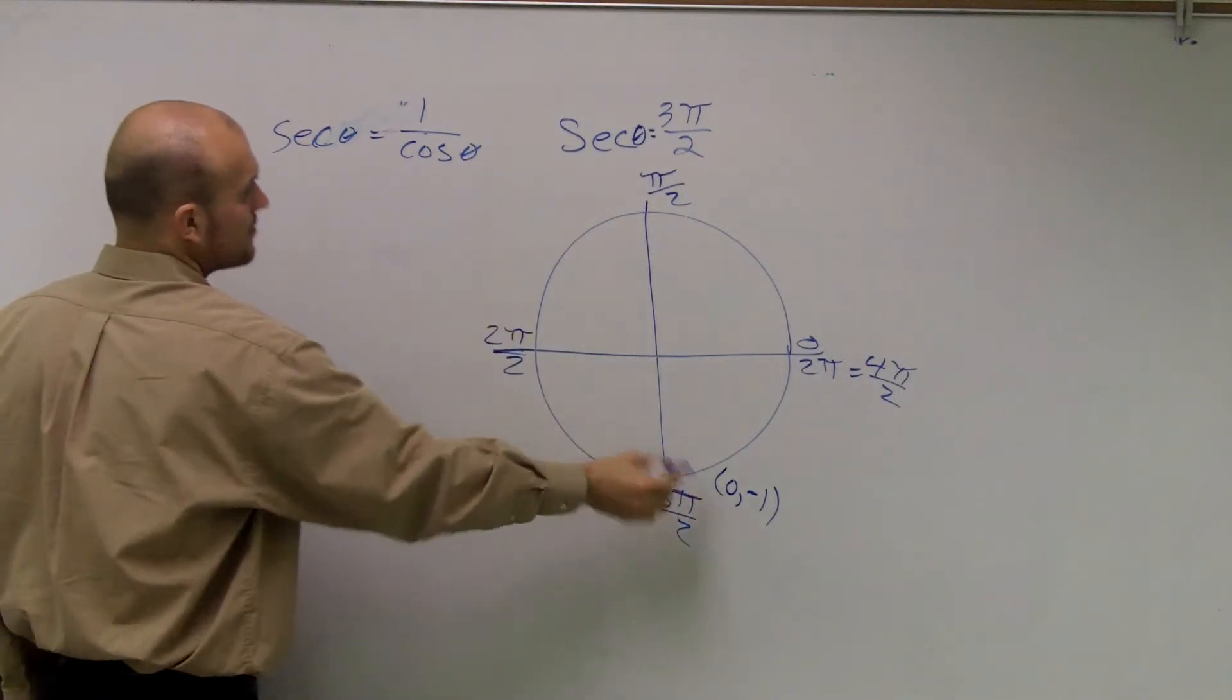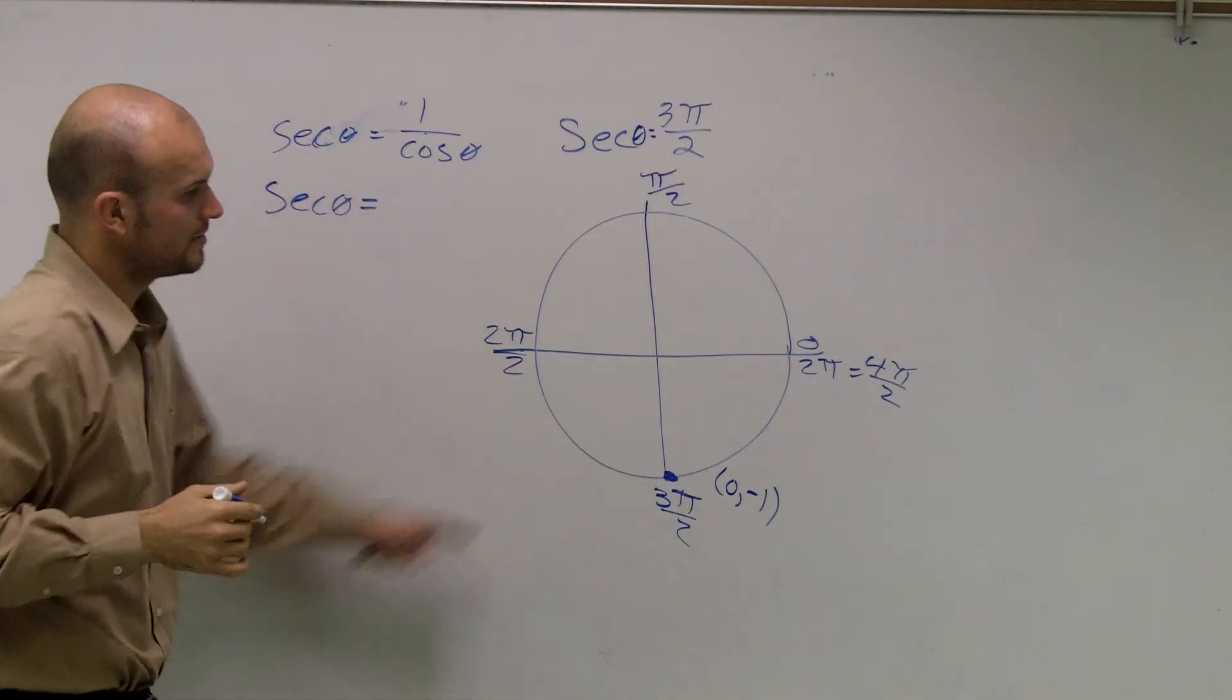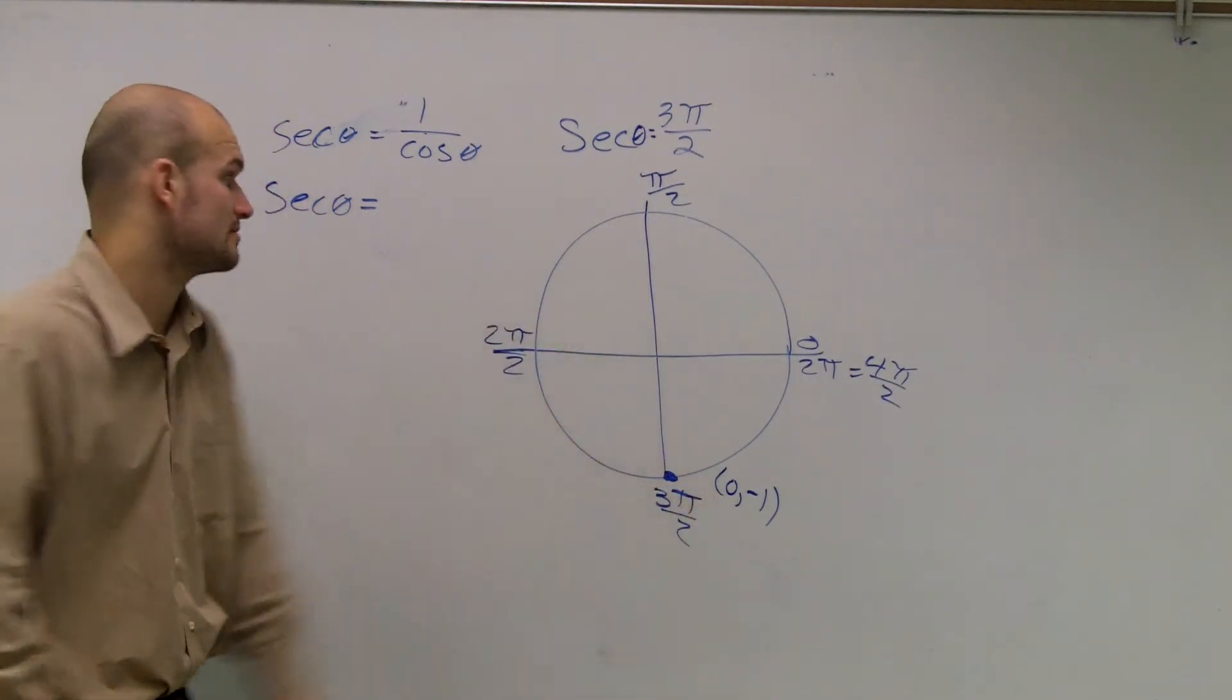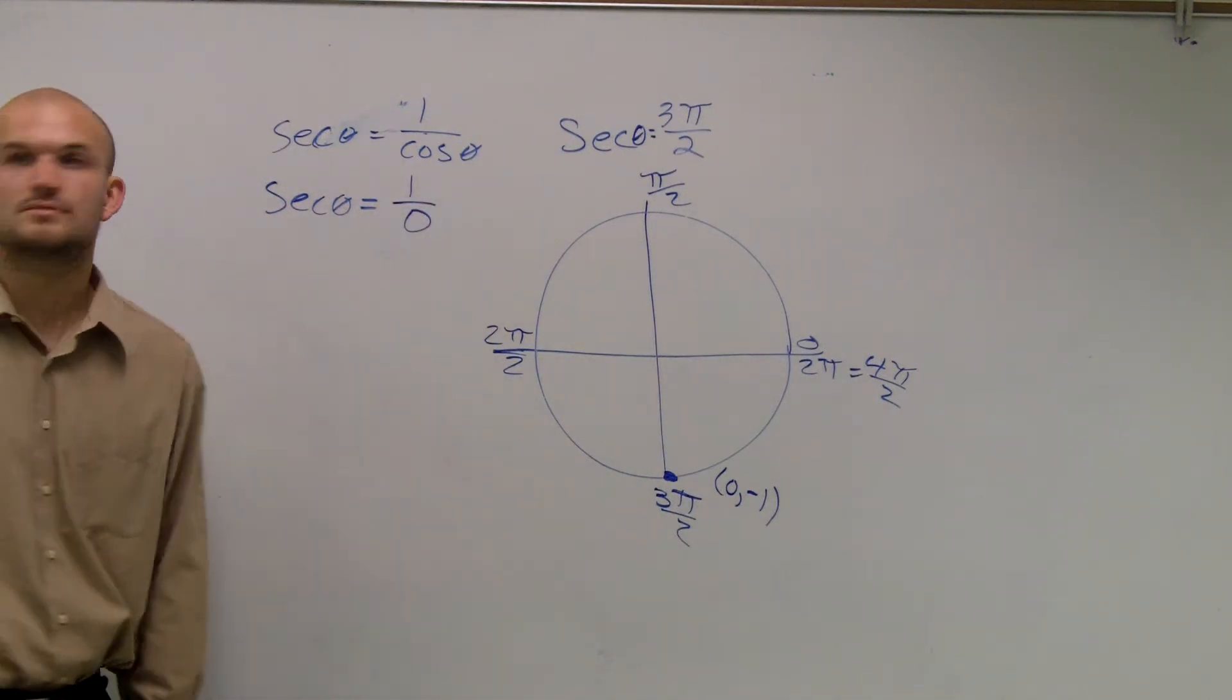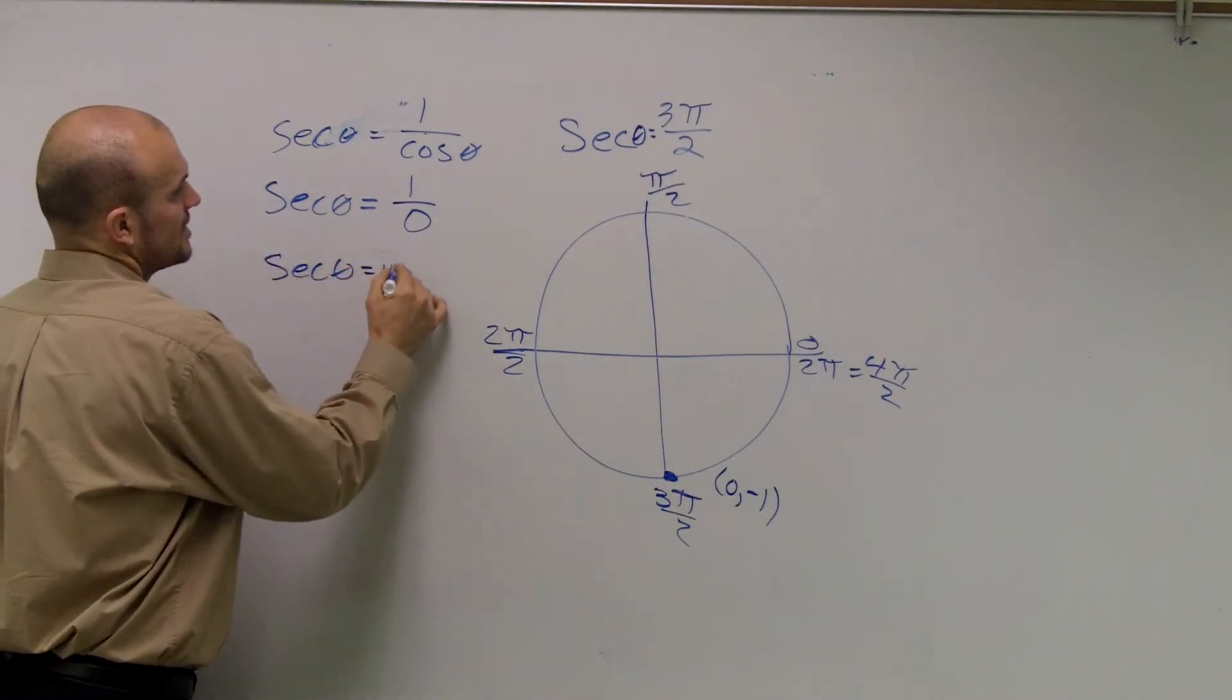So secant of theta equals 1 over the cosine of this point. What's the cosine of this point? It's 0. So we have 1/0. Can you divide 1 by 0? No. Therefore, secant of theta is undefined.